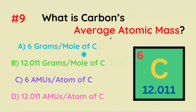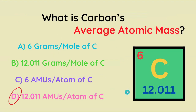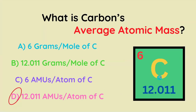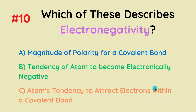Carbon's average atomic mass is what of these? It's going to be 12.011 AMUs per atom of carbon. So the average mass of a single atom of carbon is 12.011 — that's what this number means.